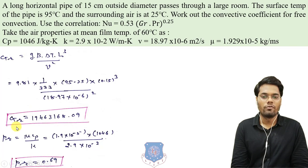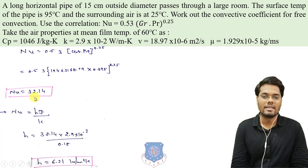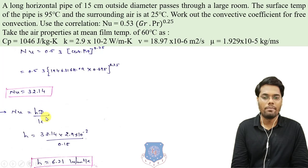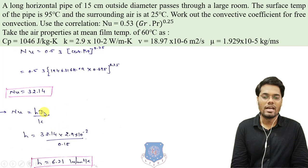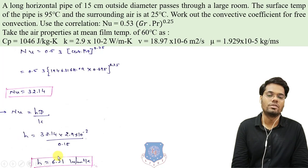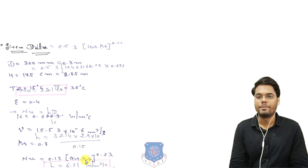Putting Grashoff and Prandtl into the correlation, the Nusselt number is 32.14. Using Nu = H·Lc/k with characteristic length as diameter, conductivity and diameter are known, so solving for H gives the convective heat transfer coefficient as 6.21 W/m²K.